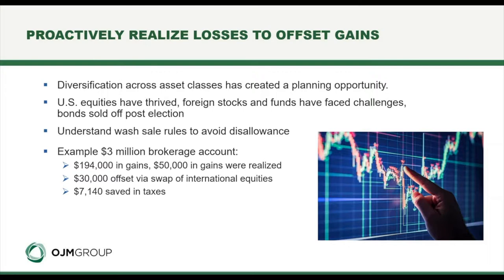The best way to learn is through a quick example. The client I referenced earlier had a $3 million brokerage account with $194,000 in gains — $50,000 of which were realized gains. We performed a tax swap of international equities, which had a $30,000 loss in that position. It ultimately saved the client over $7,000 — a planning opportunity that resulted in what most would consider substantial savings.